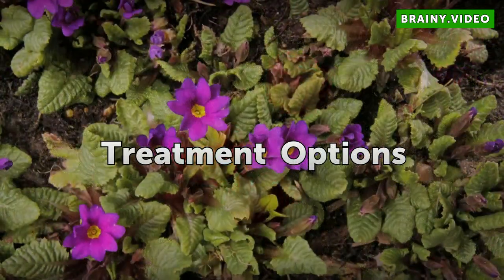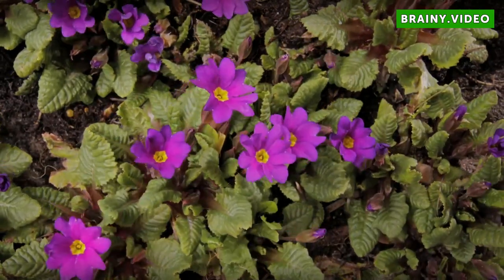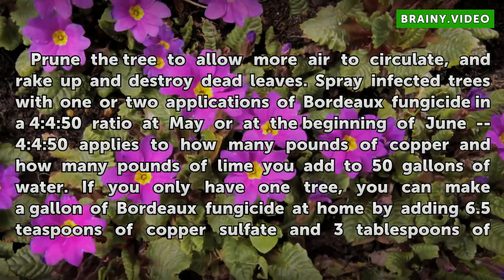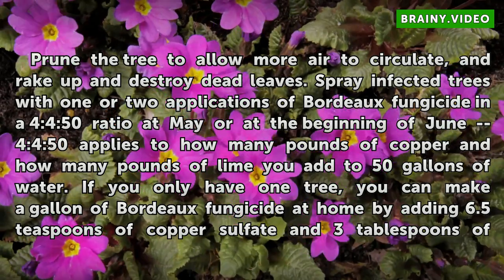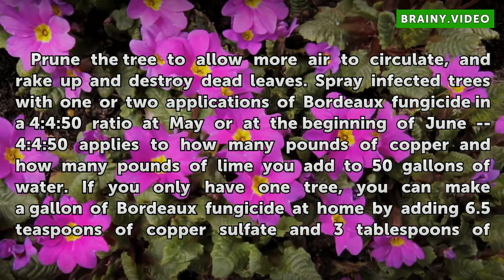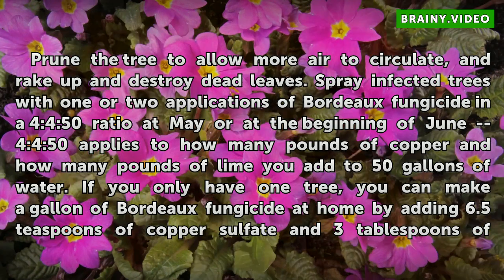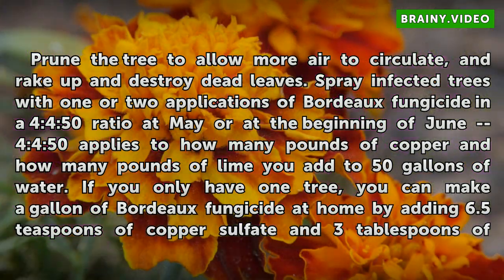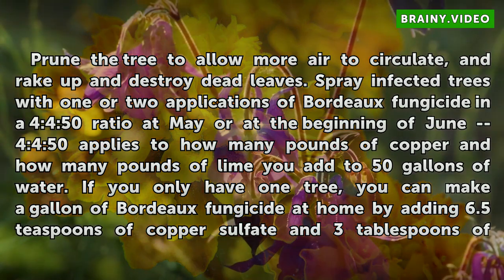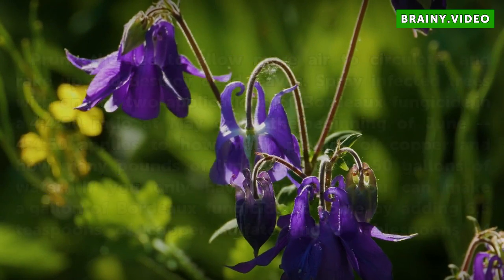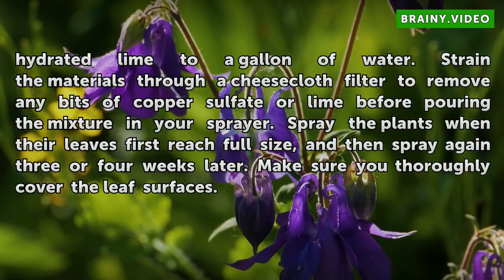Prune the tree to allow more air to circulate, and rake up and destroy dead leaves. Spray infected trees with one or two applications of Bordeaux fungicide in a 4-4-50 ratio in May or at the beginning of June. This ratio applies to pounds of copper and pounds of lime added to 50 gallons of water. If you only have one tree, you can make a gallon of Bordeaux fungicide at home by adding 6.5 teaspoons of copper sulfate and 3 tablespoons of hydrated lime to a gallon of water.